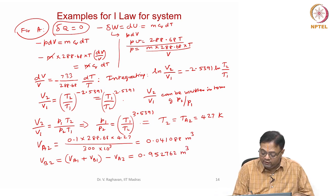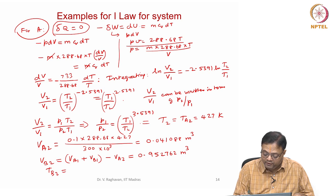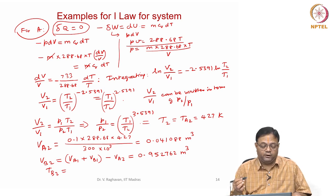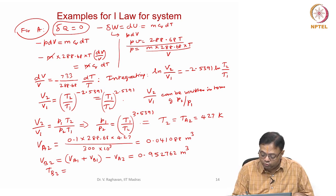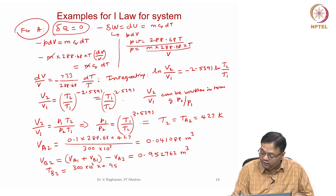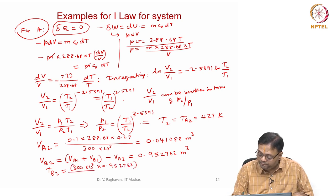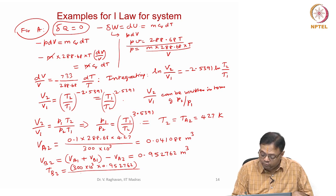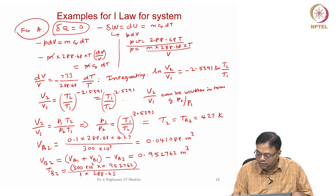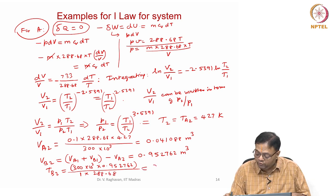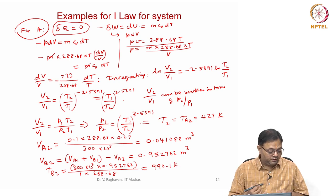Once the final volume of B is known and the final pressure is 300 kPa, the final temperature of B is found from the equation of state: Tb2 = 300 × 10³ × 0.52762 ÷ (1 × 288.68) = 990.1 Kelvin.